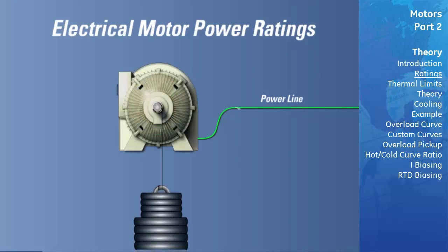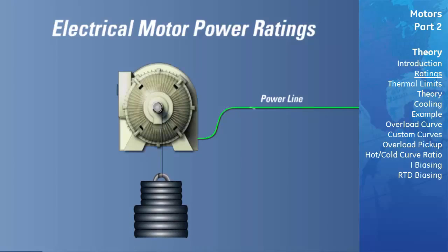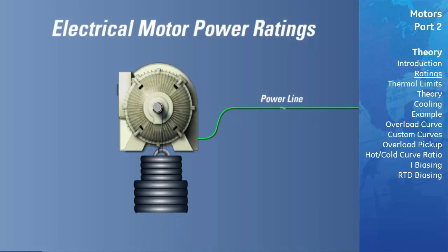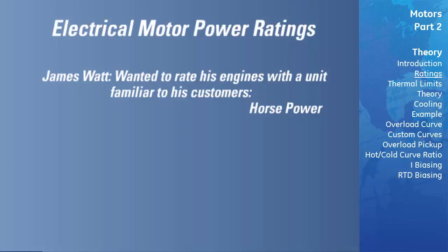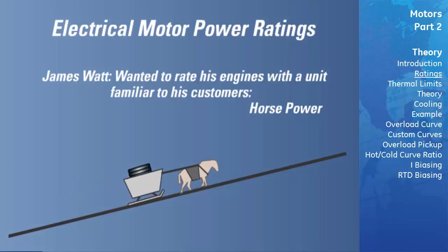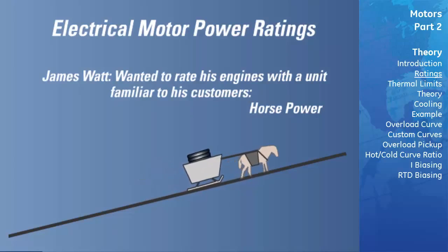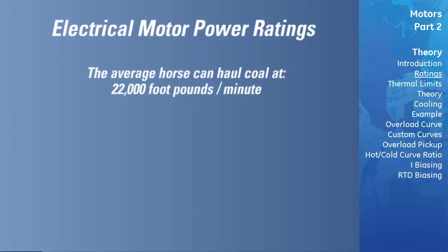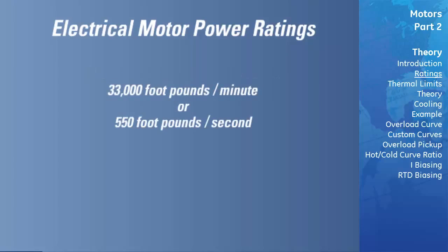The function of a motor is to perform work. Work is equal to multiplying the applied force by the distance it has been applied. Power is a measure of the rate at which work is being done. James Watt wanted to rate steam engines in a unit of power his customers could relate to. Since the traditional source of power had been the horse, he quantified the work a horse could perform into a new unit — the horsepower. He determined that the average horse could haul coal at 22,000 foot-pounds per minute, then raised this by a factor of one-half to 33,000 foot-pounds per minute, or 550 foot-pounds per second, establishing this as one horsepower.